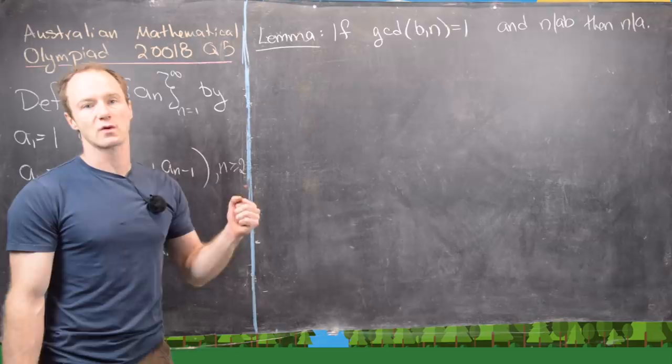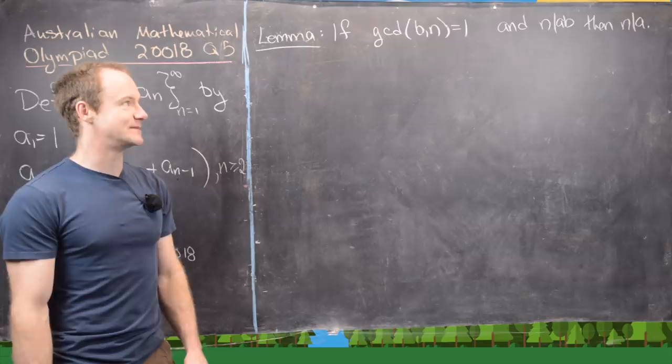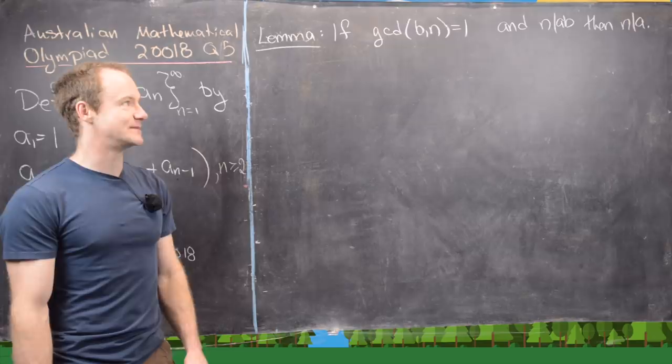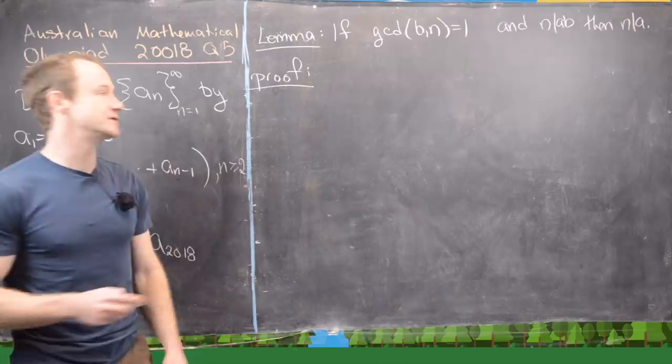So if the GCD of b and n equals one, in other words b and n are relatively prime, and n divides the product a times b, then that means that n has to divide a. So let's go ahead and look at the proof of it. And we're going to use this pretty common fact involving the GCD.